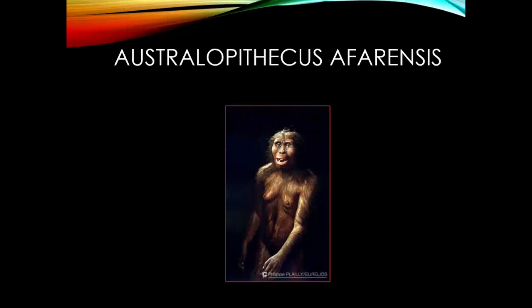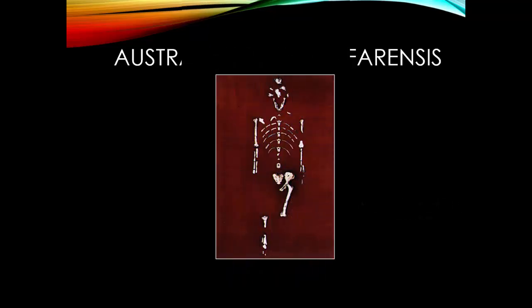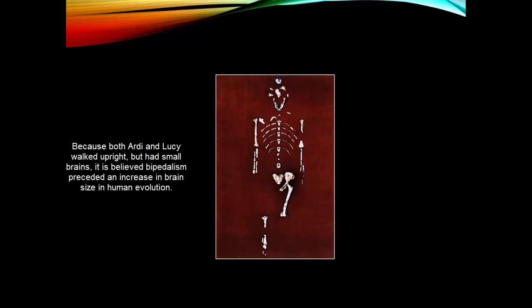Next in line is Australopithecus afarensis, otherwise known as Lucy. She lived in Africa about 3 to 4 million years ago. This is what remains of her skeleton. From that skeleton, we can tell that she also walked upright and had a slightly larger brain size than Ardi, measuring about 400 to 500 cubic centimeters.